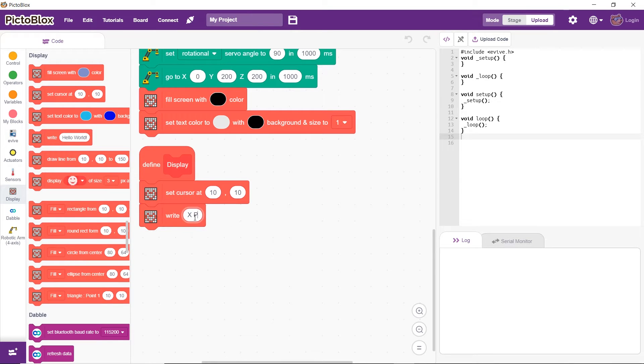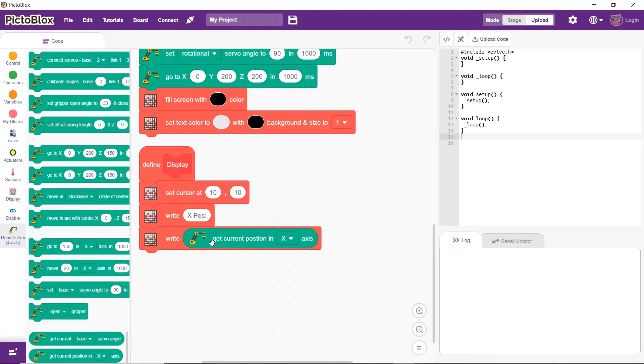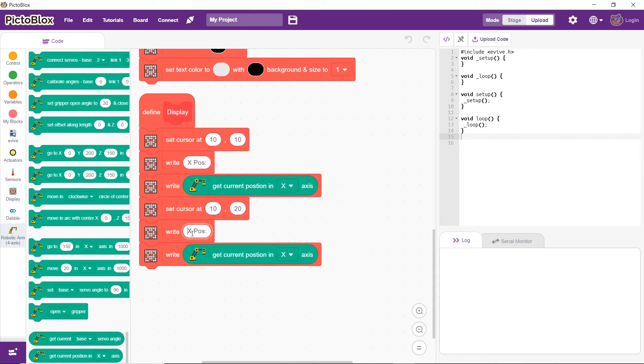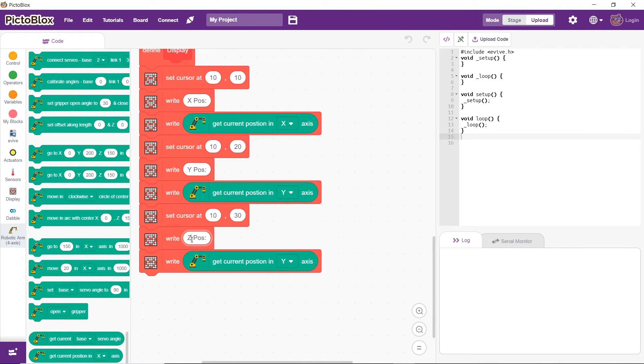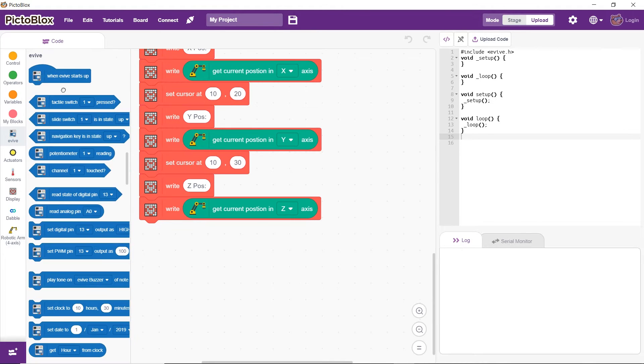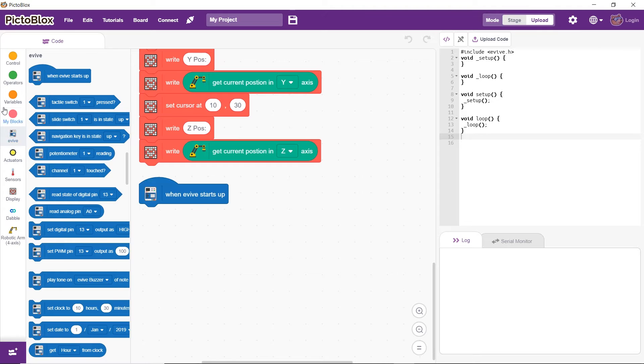Under the display block, set cursors to monitor x, y and z positions as we will display their values whenever we change the position along any axis. First, drag and drop the when evive starts up. It will make sure that the code executes when evive is switched on. Then, initialize the robotic arm and display.